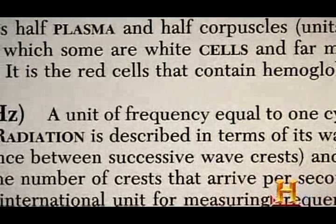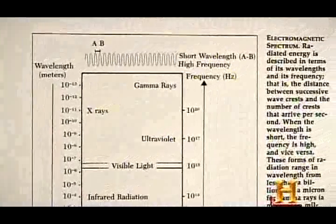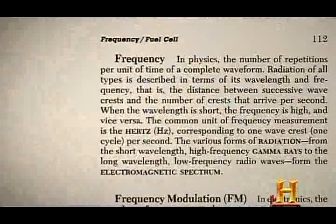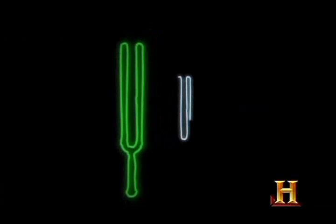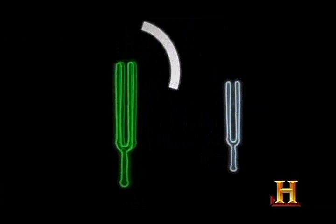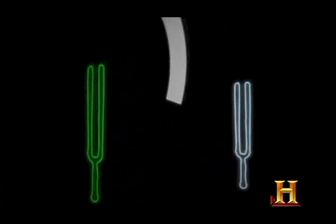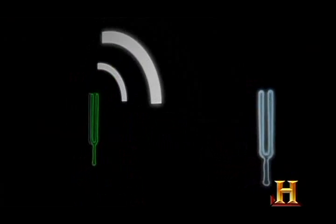Resonance is the specific pitch that triggers an exaggerated oscillation in an object. Every object has its own specific resonant frequency. For example, a tuning fork in the key of C has little effect on a tuning fork in the key of D. But if both tuning forks are in the same key, striking one will cause the other to vibrate in sympathy.